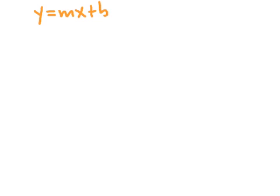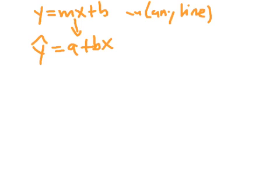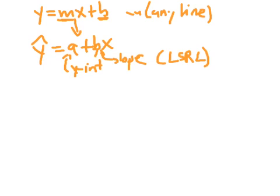In general, the equation of any line is y equals mx plus b. For LSRLs, we use the notation y-hat equals a plus bx. In the standard line form, m is the slope and b is the y-intercept. For the LSRL, a is the y-intercept and b is the slope — so the letters are reversed, which is why the x variable is attached to the second term.